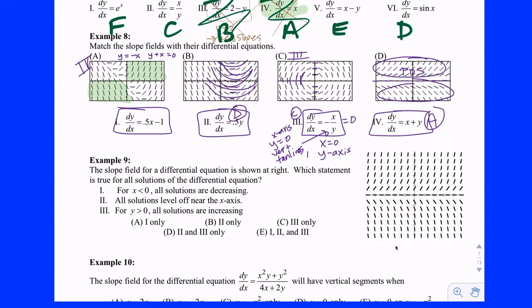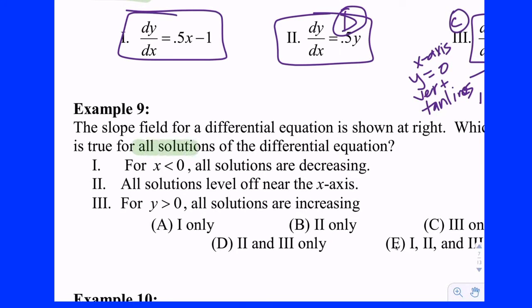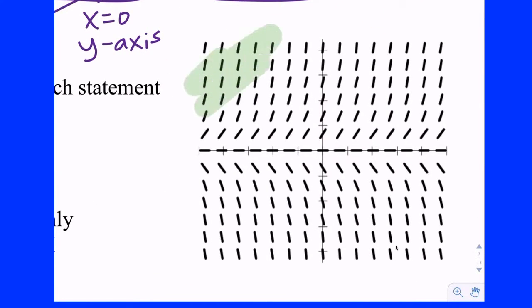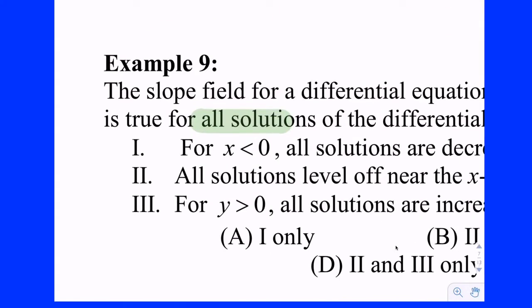Let's look at example 9. The slope field for a differential equation is shown. Which statement is true for all solutions to the differential equation? Statement 1: when x is less than zero — to the left of the y-axis — all of the solutions are decreasing. Is that true? No — over here in quadrant two it looks like we have positive slopes. So statement 1 is out.